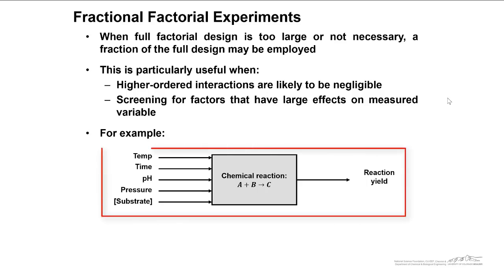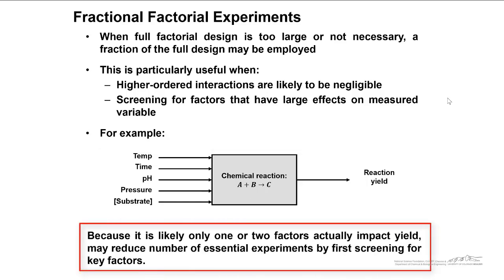We've got an example here. We have a chemical reaction, A plus B going to C. You hypothesize that there might be five things, five factors that have an effect on the reaction yield: temperature, time, pH, pressure, and concentration of substrate. Because it is likely that only one or two factors actually impact the reaction yield, we may reduce the number of essential experiments by first screening for the key factors.